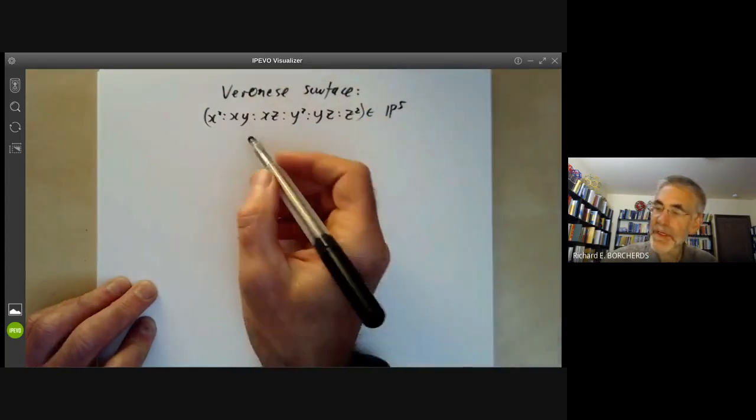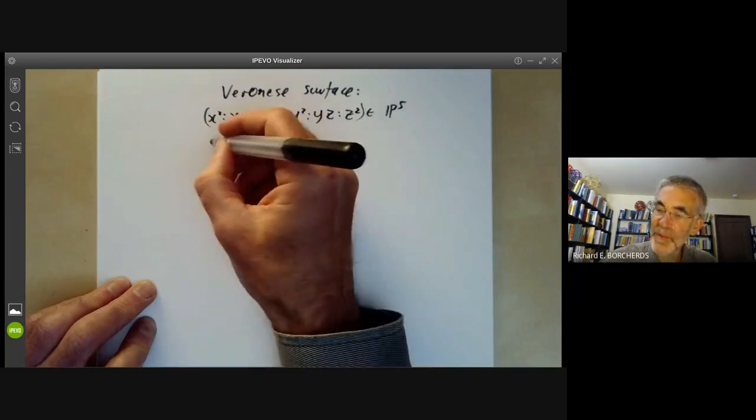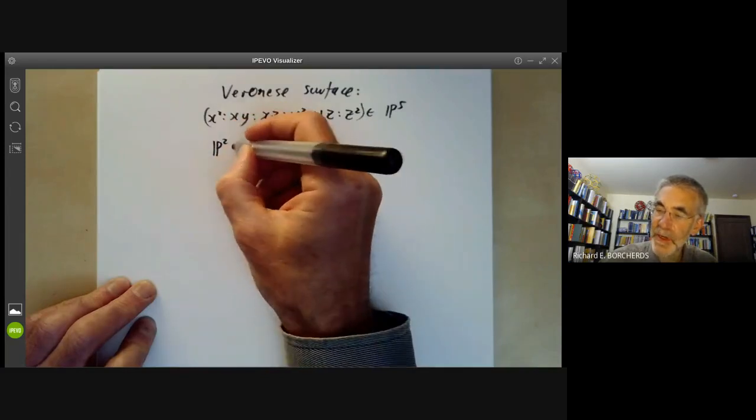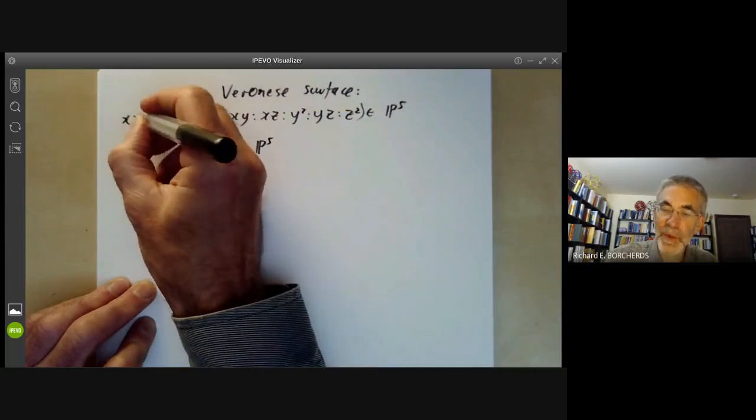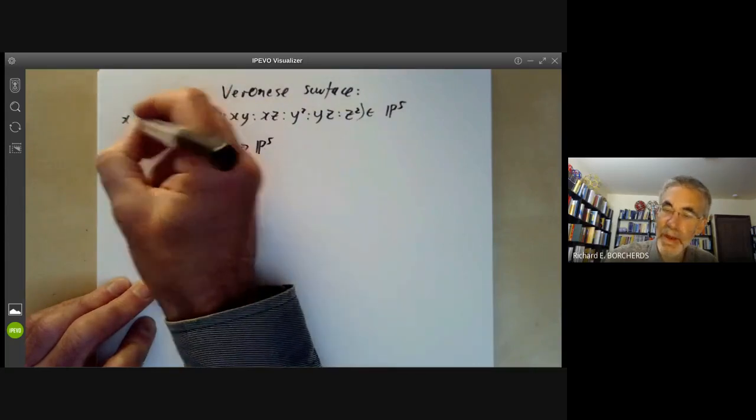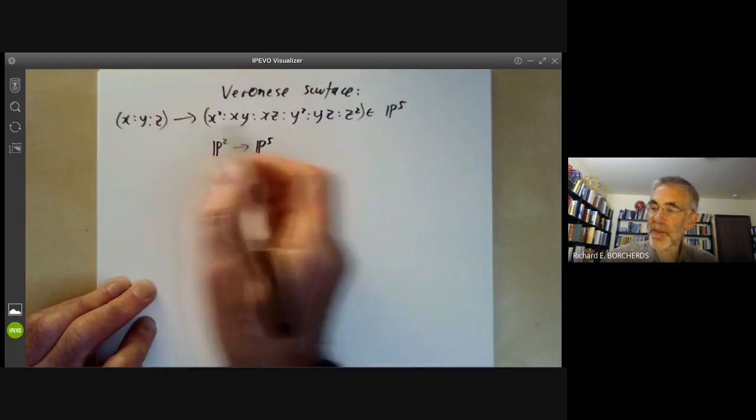You can think of this as being a map from the projective plane P2 to P5 where you take a point (x, y, z) of the projective plane to this point here.